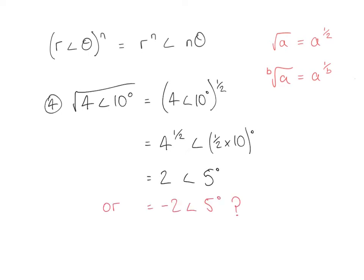You might ask: the square root of 4 has two solutions — 2 and minus 2 — so do we have a second solution, like minus 2 at an angle of 5 degrees? The answer is almost. In polar form, it's bad practice to represent a modulus as a negative number. Instead of making the modulus negative, we rotate the number through 180 degrees so it points in the opposite direction. So rather than minus 2 at an angle of 5 degrees, we say it's 2 at an angle of minus 175 degrees.